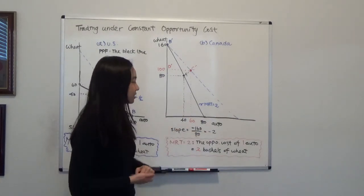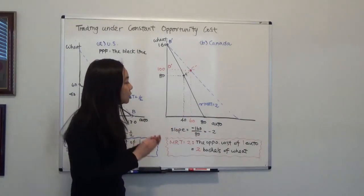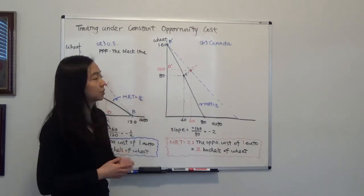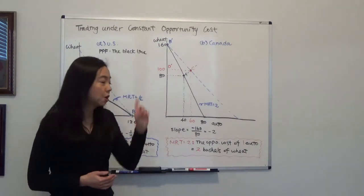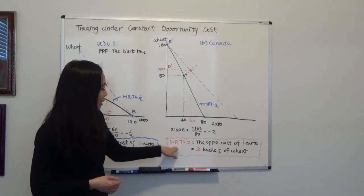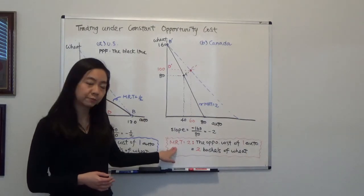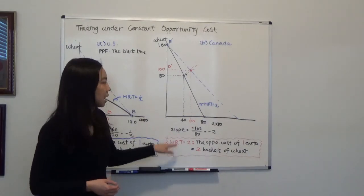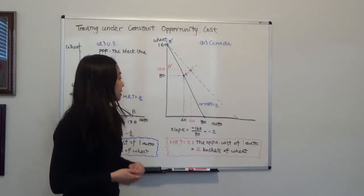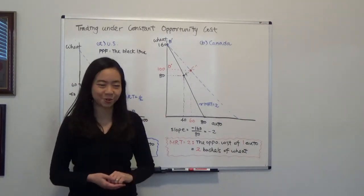And the reason why you see a negative sign, it tells you that you need to sacrifice two bushels of wheat in order to produce one automobile. So again, we call that marginal rate of transformation. That is just absolute value of the slope of your production possibility curve.